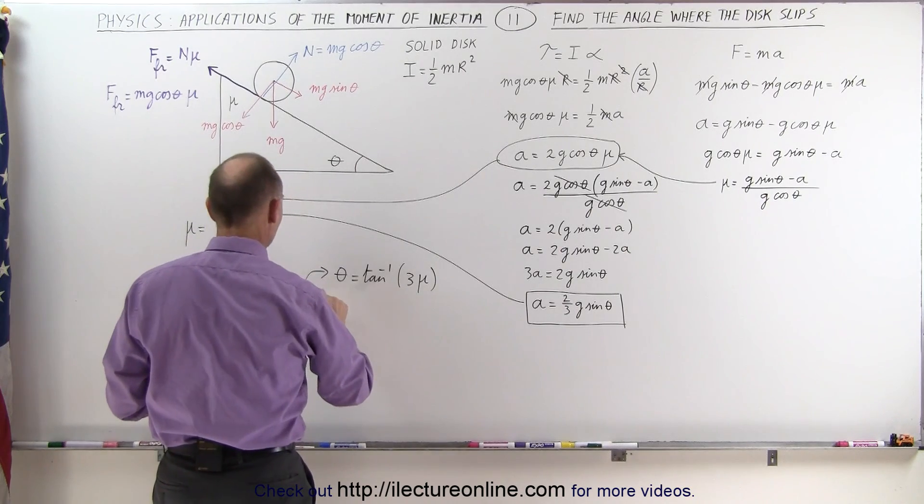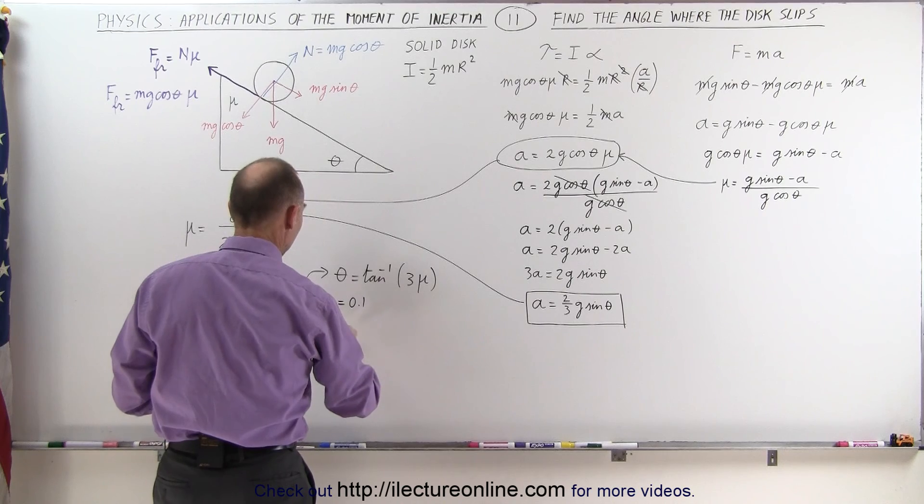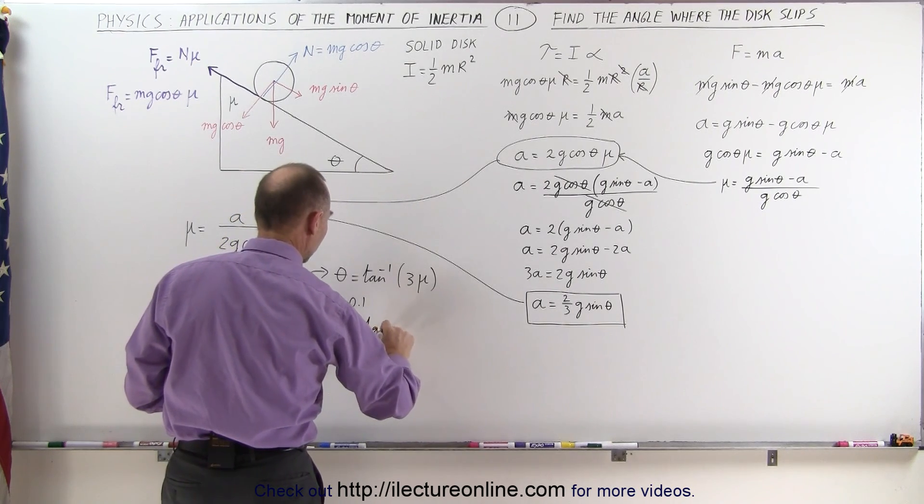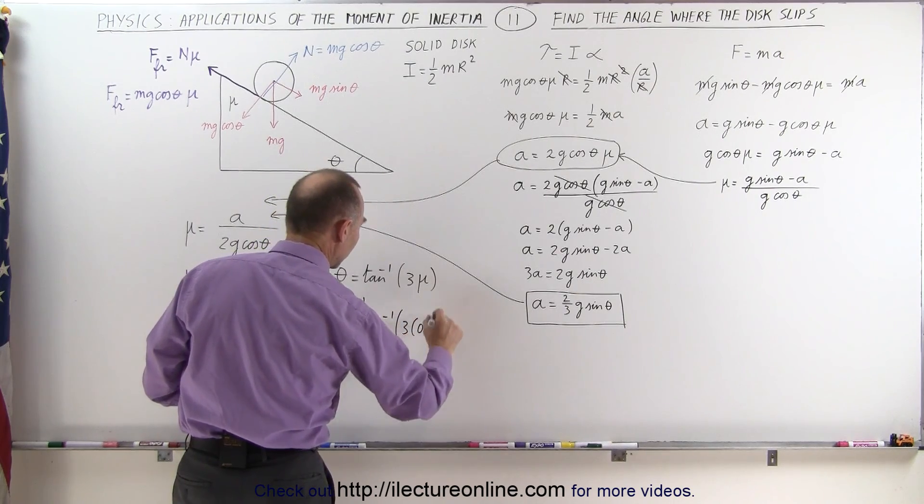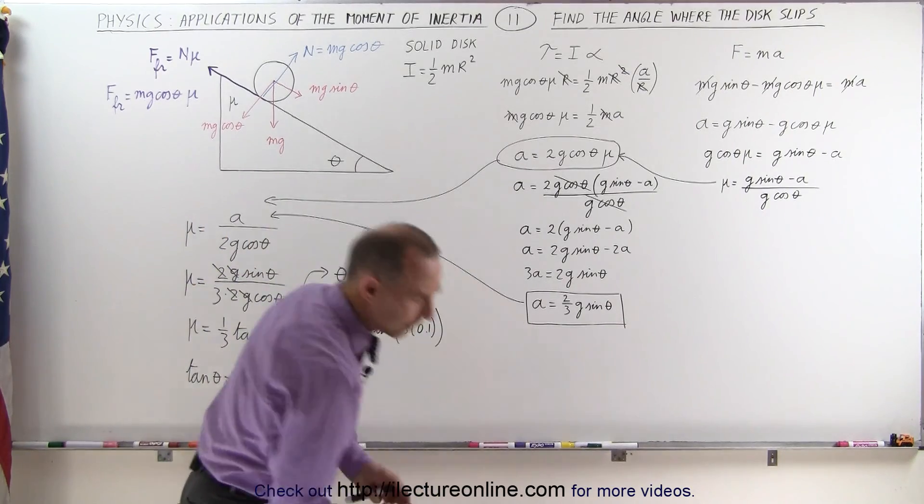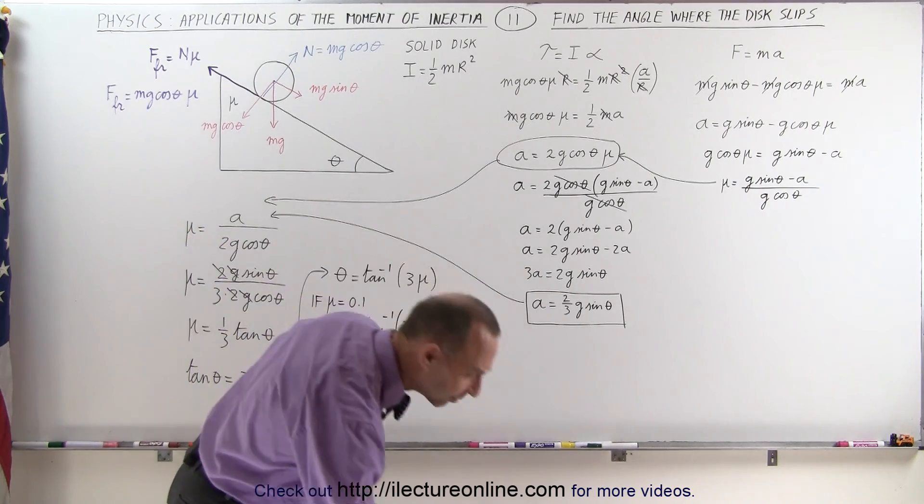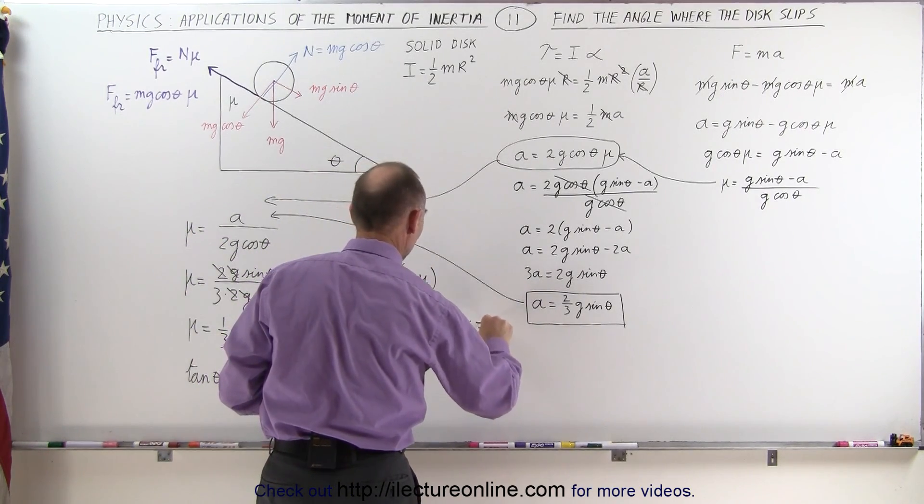For example, if mu is equal to 0.1, then theta maximum will be equal to the arc tangent of three times 0.1, which means we're looking for the arc tangent of 0.3. Take the inverse tangent and we get an angle of 16.7 degrees.